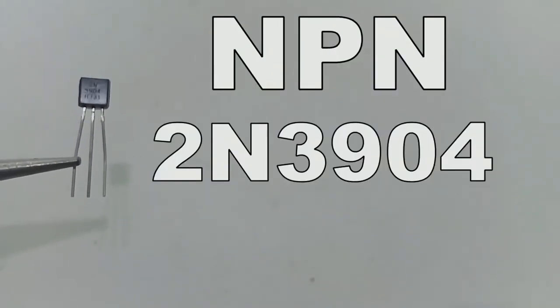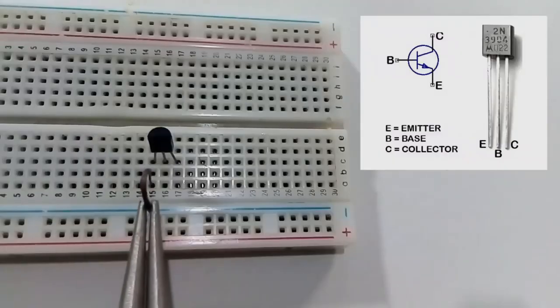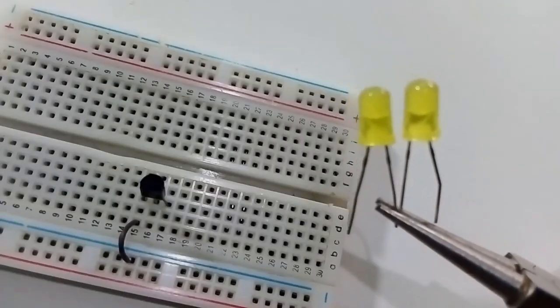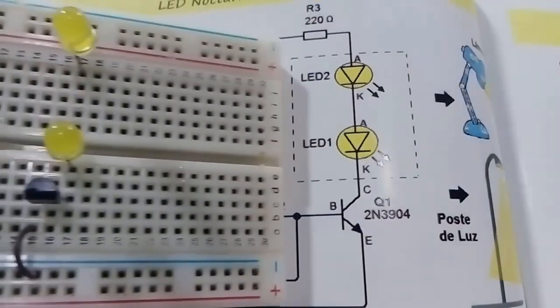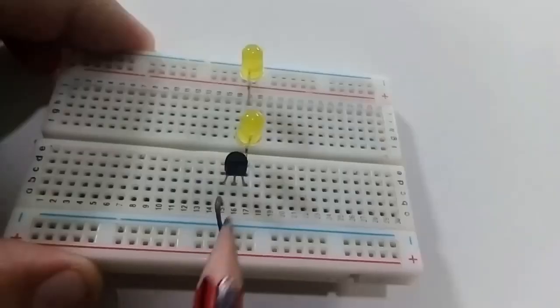We will use a bipolar NPN 2N3904 transistor. We will polarize into negative in its emitter pin. In the collector, we will connect two LED diodes with a series connection until we reach the positive through a resistor that will be placed at the end.